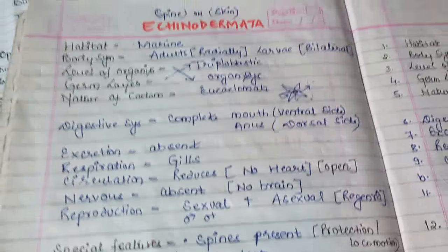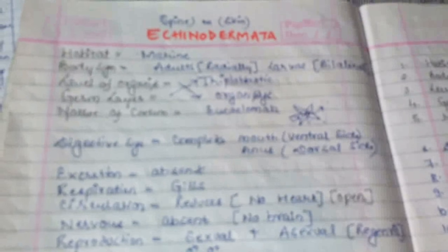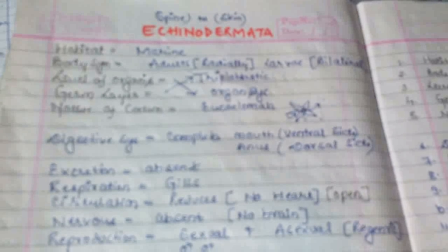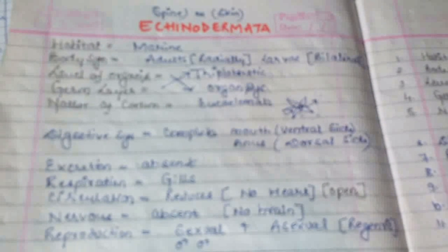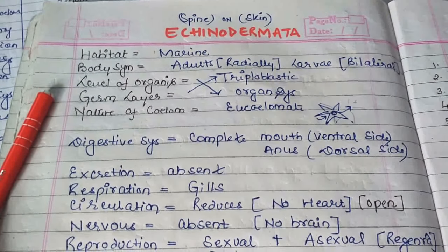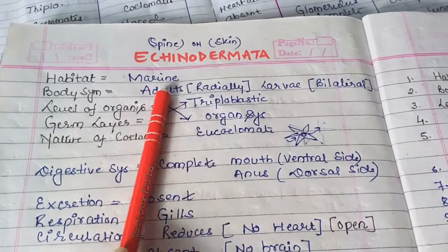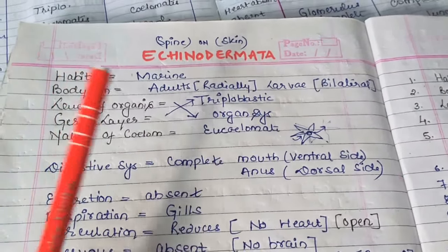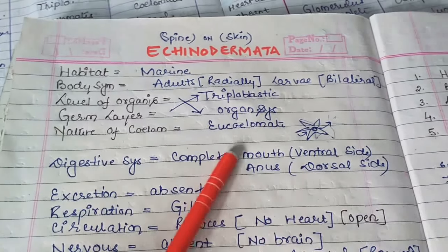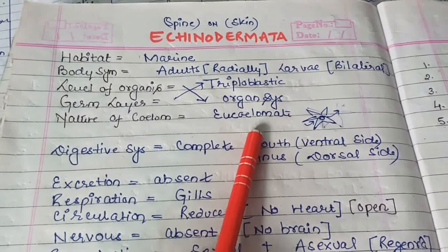Next phylum is Echinodermata. 'Echinodermata' means having spines on the body — 'echino' means spines and 'dermis' means skin. Generally in these organisms, spines are found on the skin. Regarding habitat, their organisms are generally marine, found in sea areas. Body symmetry: generally radial symmetry — their larval stage shows bilateral symmetry, but the adults show radial symmetry. Level of organization: organ system. Germ layer: triploblastic. Nature of coelom: coelomate organisms.